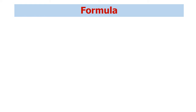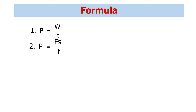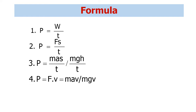Before starting the creative questions, let us see all the formulas on the topic of power and efficiency one by one. The first formula is the main formula of power: P equal to W by t. Second formula: P equal to F·s by t. Third: P equal to m·a·s by t, or m·g·h by t.